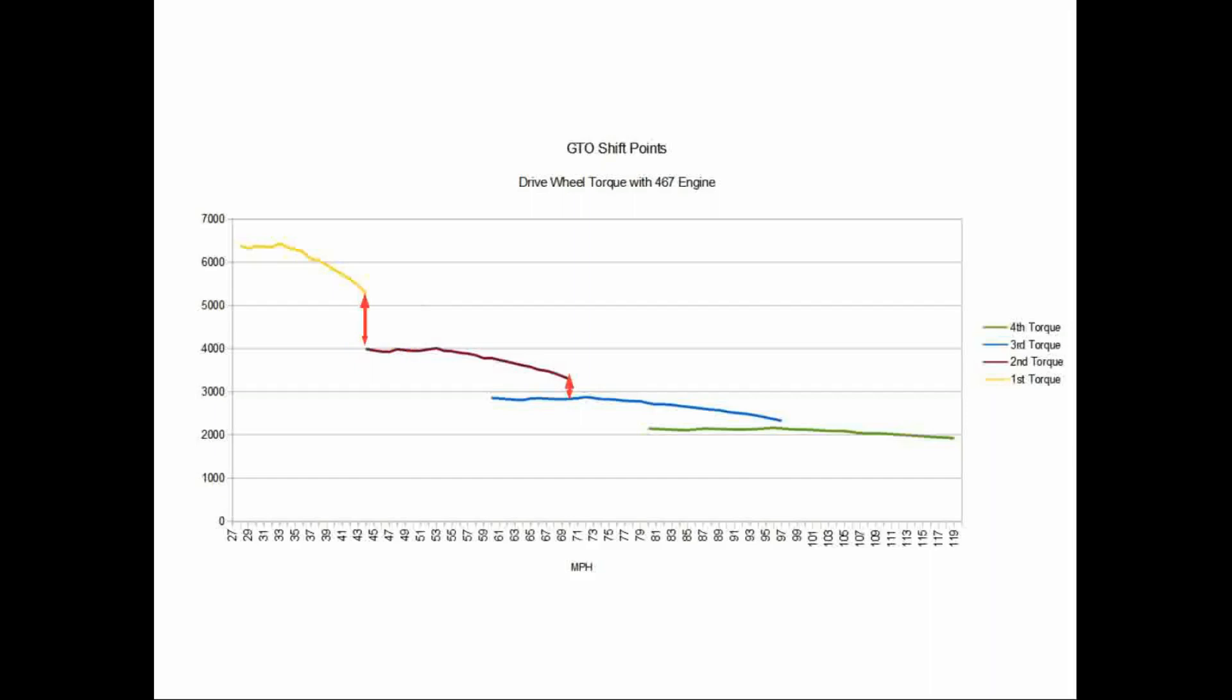The same effect happens on the 2-3 shift and, although to a lesser extent, on the 3-4 shift too. For all gears, maximum acceleration happens if you hold each gear to the engine's redline RPM before shifting.